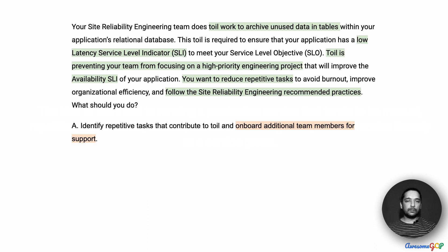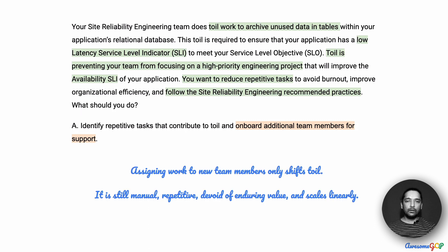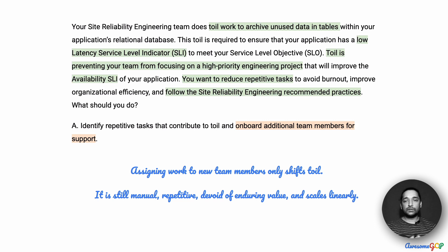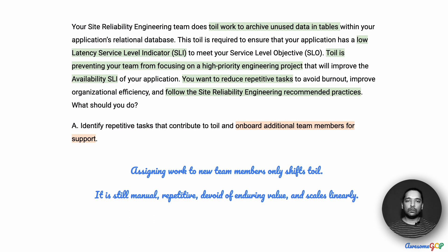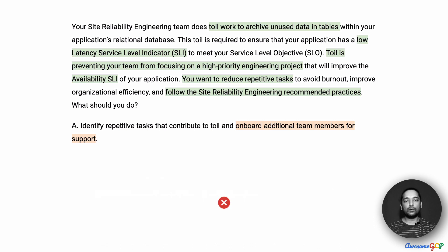Option A suggests that we identify repetitive tasks that contribute to TOIL and onboard additional team members for support. But hiring new people does not remove the TOIL — it only shifts it. The work is still going to be manual. Instead of you doing it, the new people are going to do it. It is still repetitive, still devoid of enduring value, and it definitely does not scale sub-linearly — as more effort is needed, we will have to hire more team members. So Option A fails on almost everything, and we are definitely going to eliminate it.